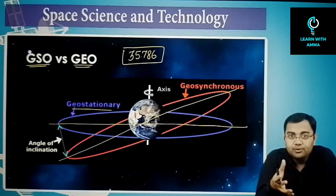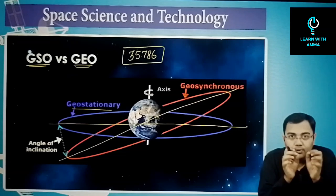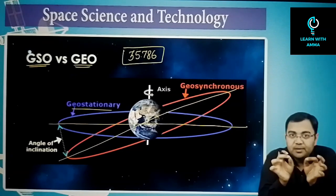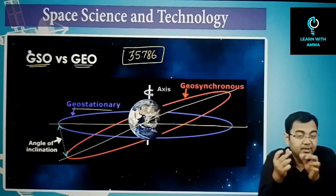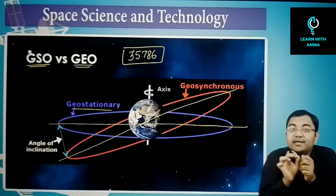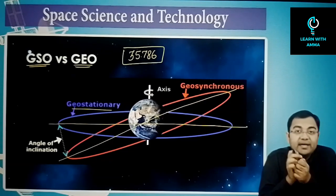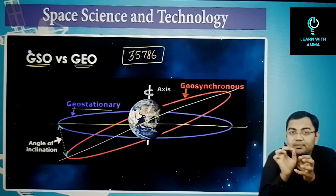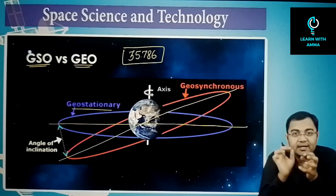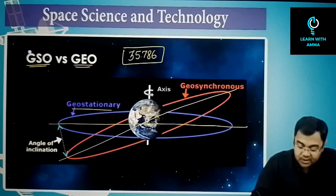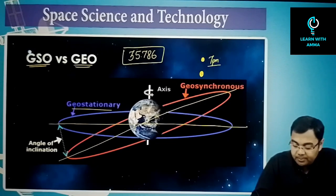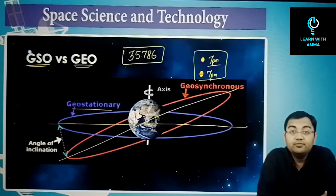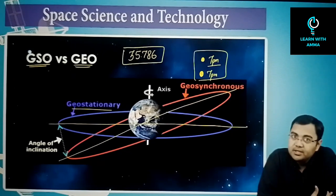From an observer's point of view on Earth, a geosynchronous satellite will appear at the same point every day at the same time. Because the period of revolution is 24 hours, if you observe the satellite at 7 pm, it will appear again at 7 pm the next day.